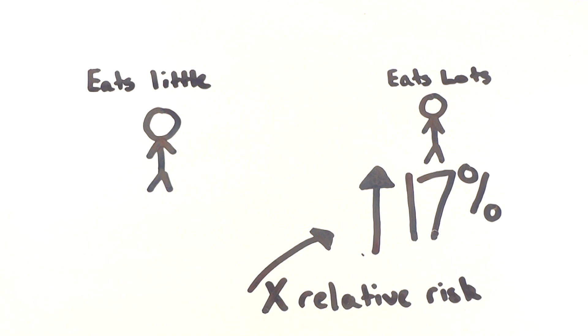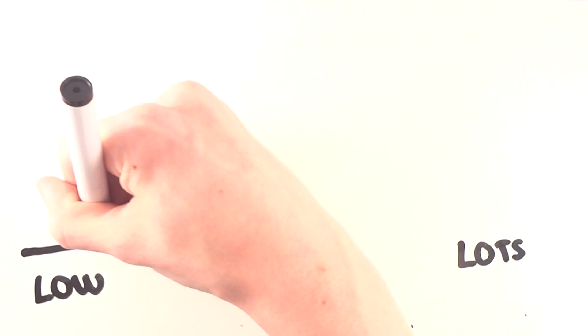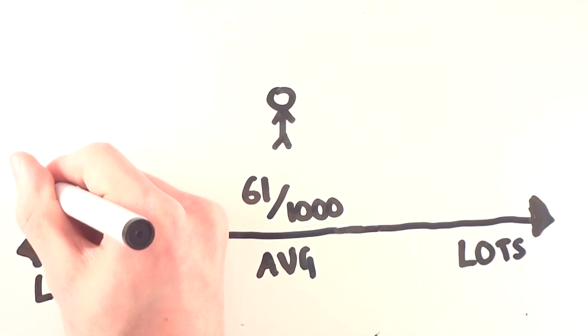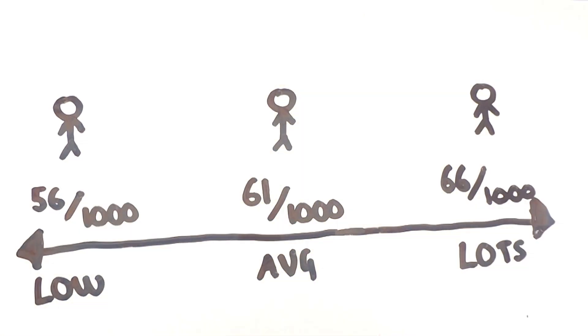Putting this into easier absolute terms, on average 61 out of 1000 people will develop bowel cancer at some point throughout their lifetime in the United Kingdom. This study points towards those who eat the lowest amount of processed or red meat on average seeing 56 out of 1000 people developing bowel cancer at some point throughout their life.